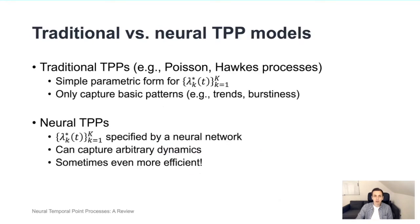Traditional TPP models, such as Poisson processes or Hawkes processes, usually assume some simple parametric form of the intensity function. However, because of the simplicity, they have one serious limitation. They can only capture very simple patterns in the event sequences. For example, they can model a change in the global trend, like change in frequency of event occurrences, or they can model clustered or bursty event occurrences.